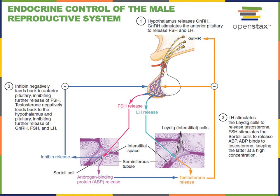Testosterone stimulates masculinizing effects like increased muscle mass, increased growth, maturation of hair follicles to produce facial hair, and enlargement of the larynx to produce the deeper voice in men. Locally within the testes, testosterone helps to stimulate the production of sperm. Within the hypothalamus and anterior pituitary, testosterone has a negative feedback control mechanism decreasing the levels of GnRH, FSH, and LH.